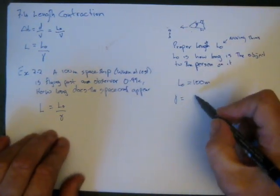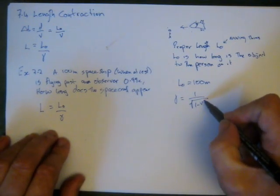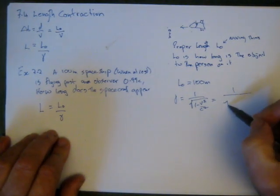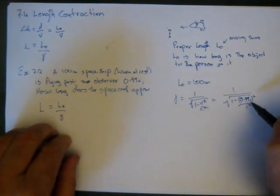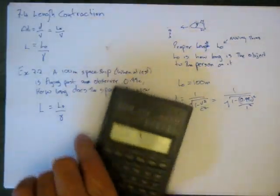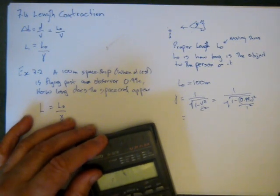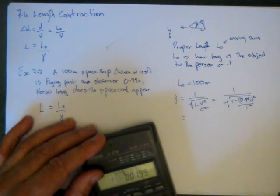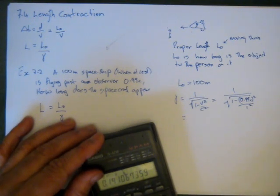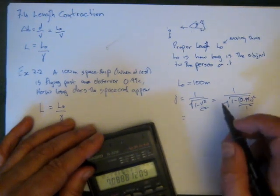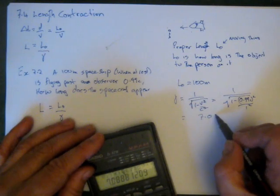We've got to work out gamma. Gamma equals 1 over the root of 1 minus V squared over C squared, which equals 1 over the root of 1 minus 0.99c squared over 1 squared. And we can stick that into a calculator. 1 minus 0.99 squared equals that. Take the square root of that, 0.14106. We take the inverse of that. It's going to equal 7.0888.